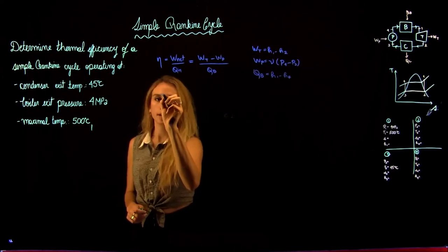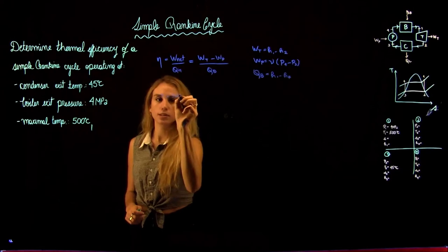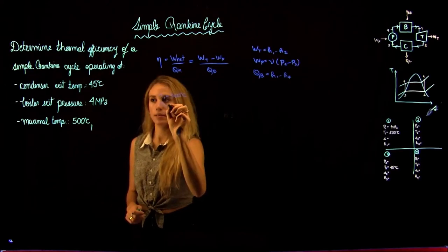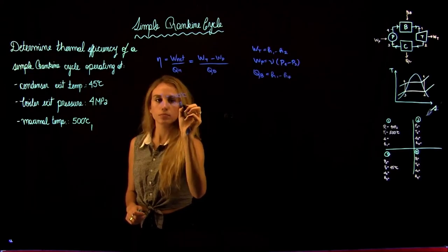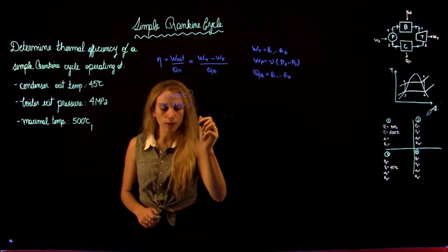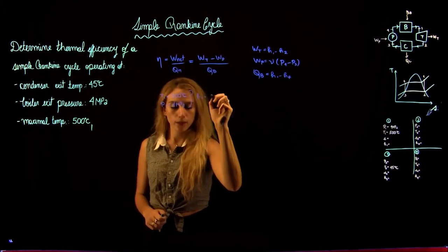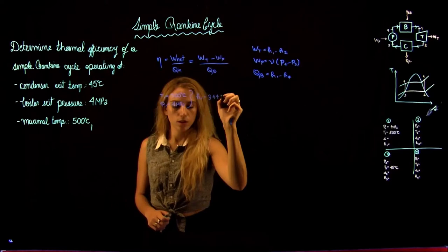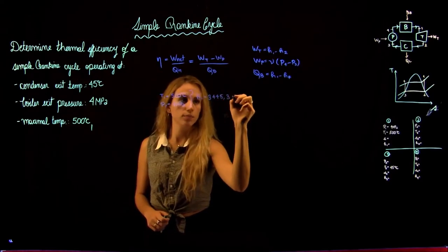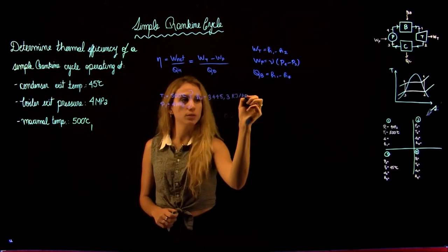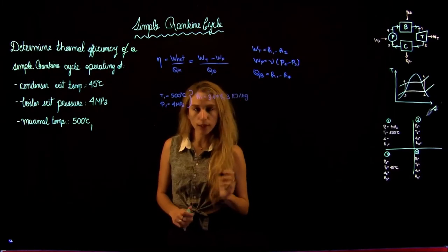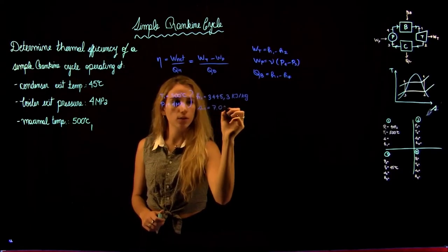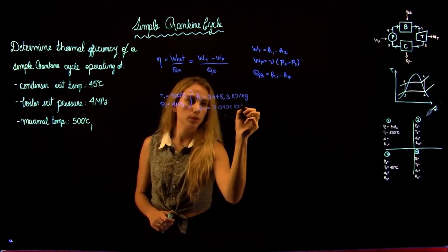Since we know that T1 is 500 degrees Celsius and P1 is 4 MPa, we can go to the tables and find that H1 is equal to 3,445.3 kJ per kg. We can also find that the entropy at state 1, S1, is equal to 7.0901 kJ per kg·K.